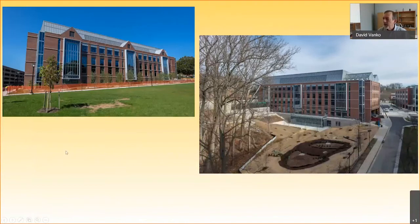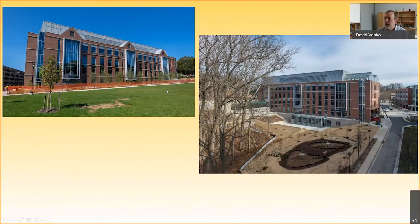And here's the finished product — two photographs. One showing the eastern bar looking from York Road. You can see this is a five-story building: floor five, four, three, two, and floor one is below grade. And this great big gray thing is actually the sixth floor — that's the penthouse. Inside the penthouse is all the mechanical, or much of the mechanical, for the building.